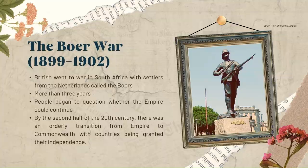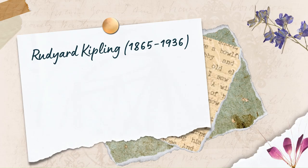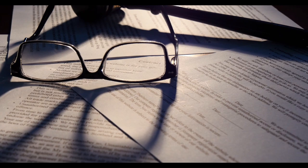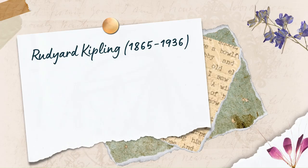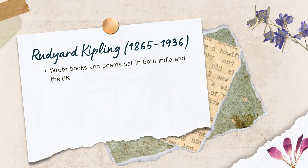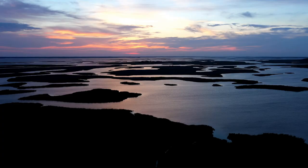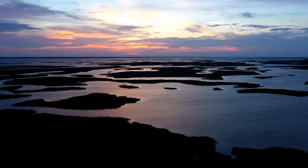Rudyard Kipling (1865–1936). Rudyard Kipling was born in India in 1865 and later lived in both India and the UK. He wrote books and poems set in both countries. His poems and novels reflected the idea that the British Empire was a force for good. Kipling was awarded the Nobel Prize in Literature in 1907. His books include The Just So Stories and The Jungle Book, which continue to be popular today. His poem called 'If' has often been voted among the UK's favourite poems.